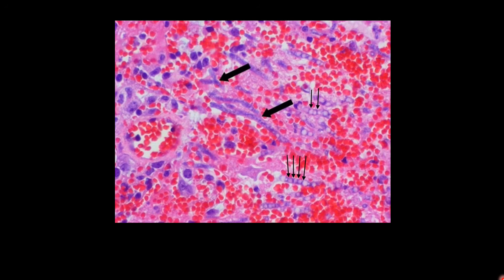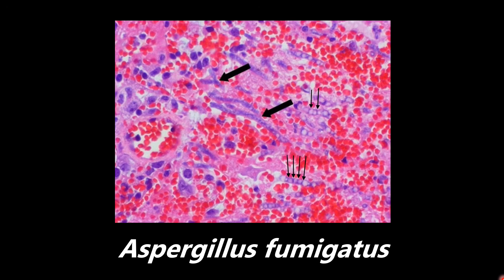This first one is a picture of Aspergillus fumigatus. The important things to note are shown by the arrows. The thick arrows show the hyphae, which are branching at acute angles. The thin arrows show the septation — you can see these lines going down clearly. One way to remember the acute angle branching is that acute starts with an A, as does Aspergillus. So it is acute angle branching hyphae.